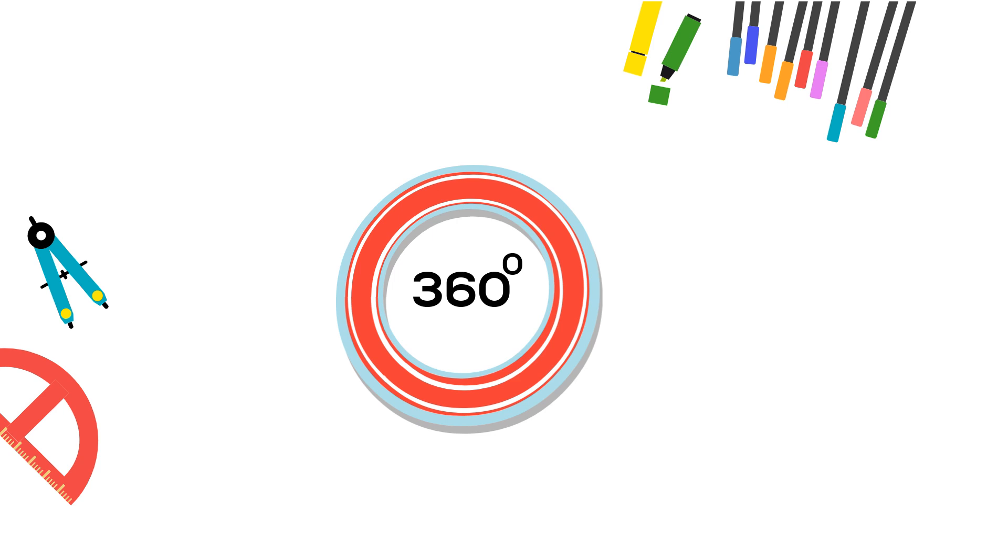Let's start with a circle. A circle has a degree measure of 360 degrees. If you draw a diameter, which is a straight line, it cuts the circle in half and it has an angle measure of 180 because 360 divided by 2 is 180.